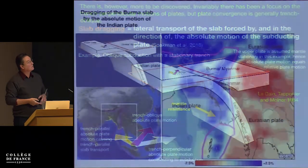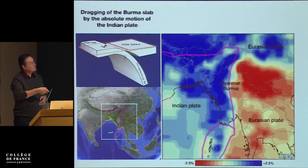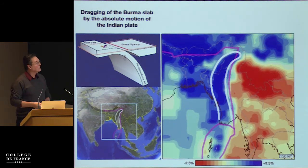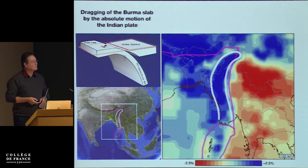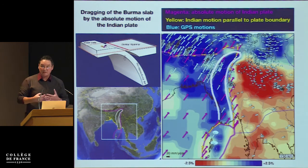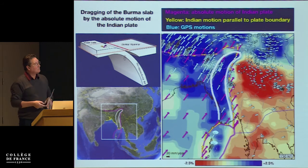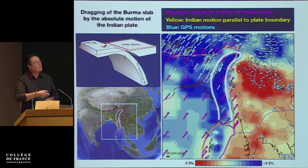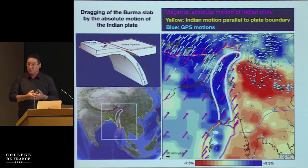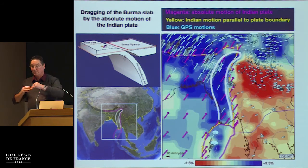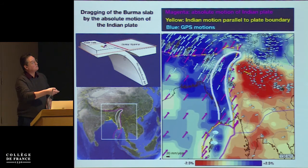This is the situation of the India plate, Eurasia, and Burma. The tomography at 150 kilometers shows the slab, better delineated at greater depth. Using the Morvel 5-6 no-net-rotation model plate boundaries, I plot plate motions and GPS in an absolute mantle frame. You can see a very strong trench-parallel plate motion — the yellow vectors — which tends to transport the slab through the mantle northward. There is also a trench-perpendicular plate motion contributing to subduction. The GPS nicely follows this pattern.